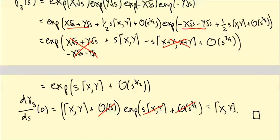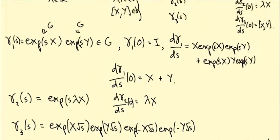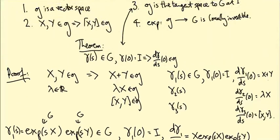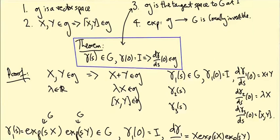So this proves the theorem. We produced three paths γ₁, γ₂, γ₃ whose derivatives at s=0 are X+Y, λX, and [X,Y] respectively, for any X, Y in the Lie algebra and λ real. By the theorem we should put a big box around, we can add elements of little g and get another element, rescale elements and get another element, and take brackets and get another element. Therefore little g is a Lie subalgebra of gl(n,R).